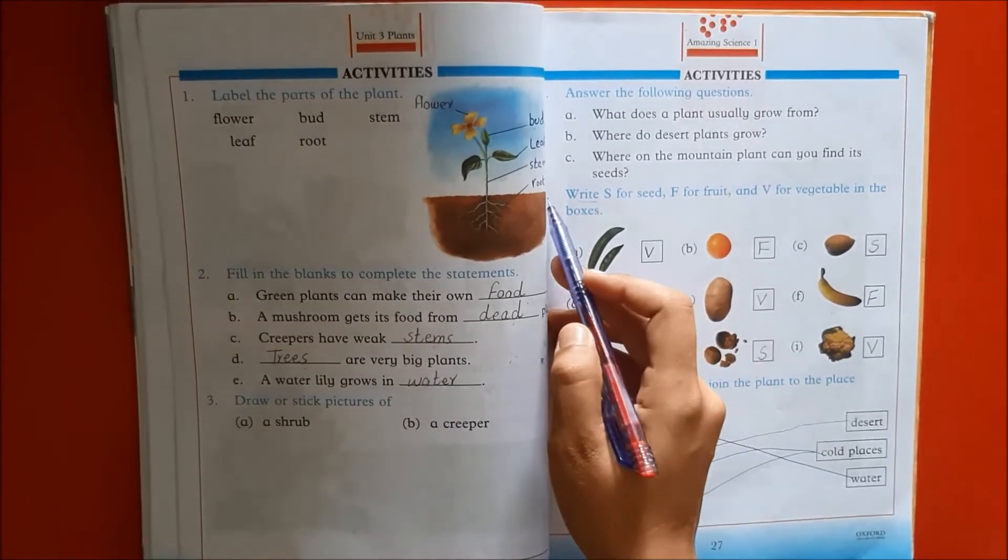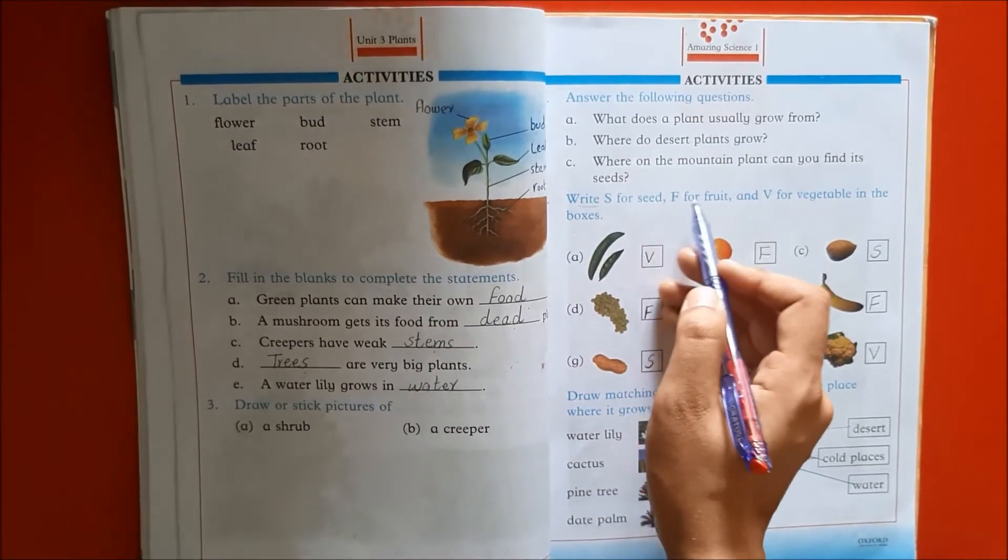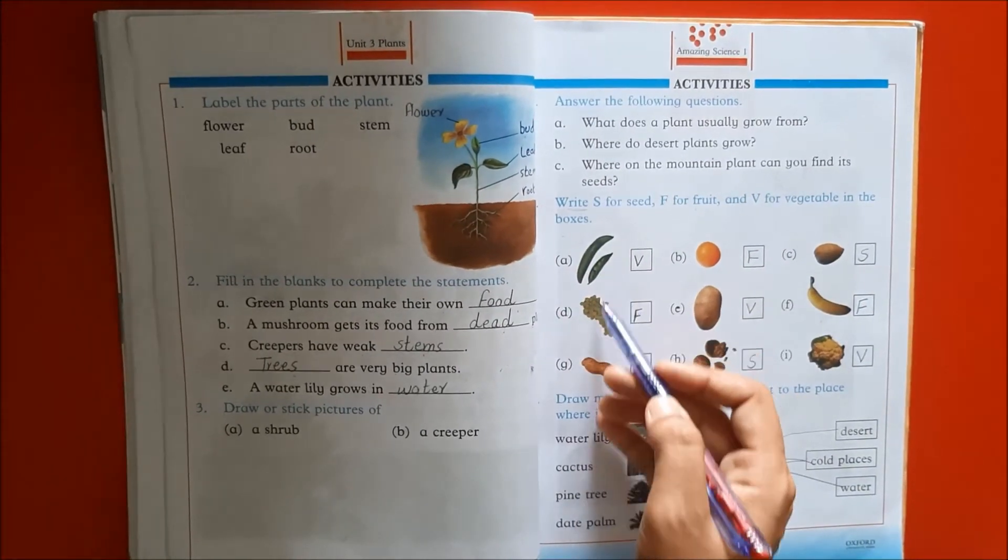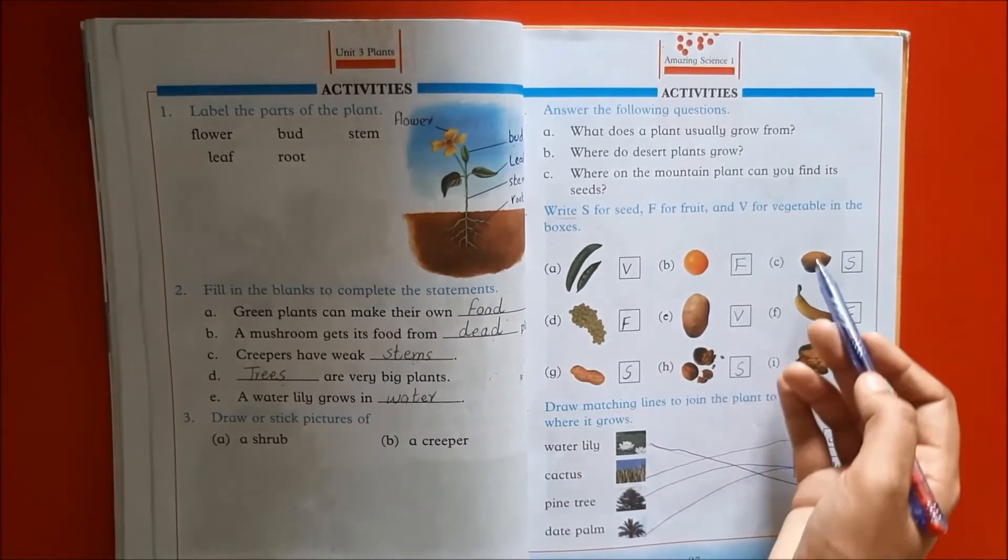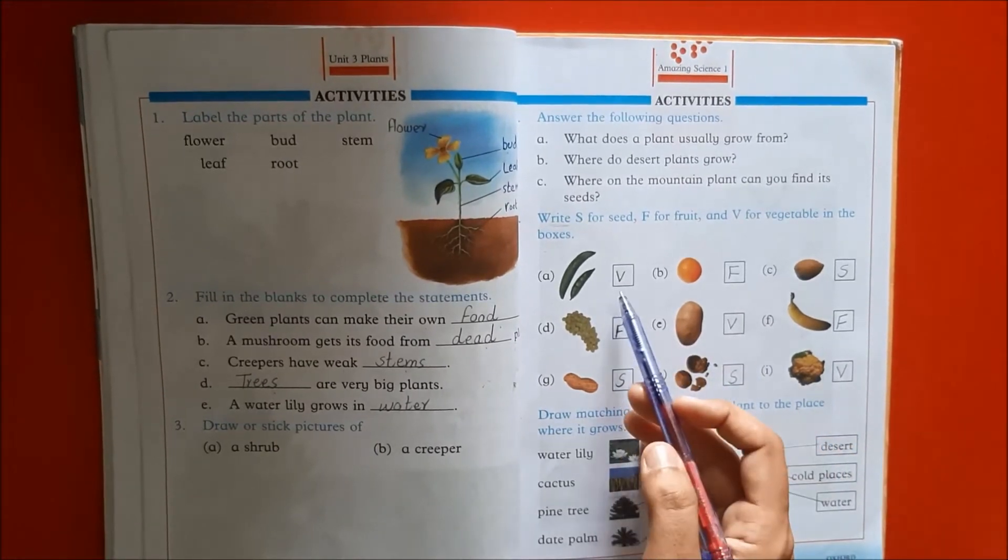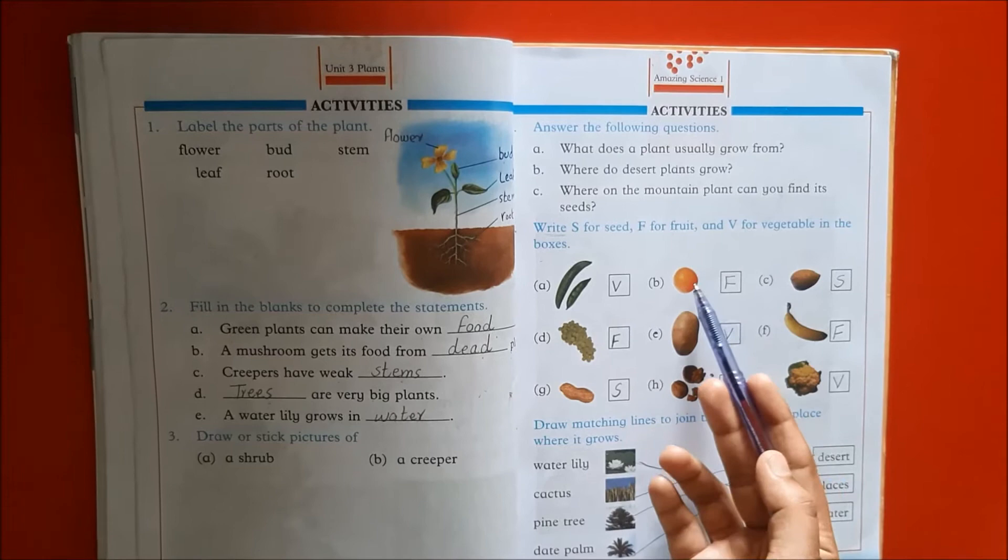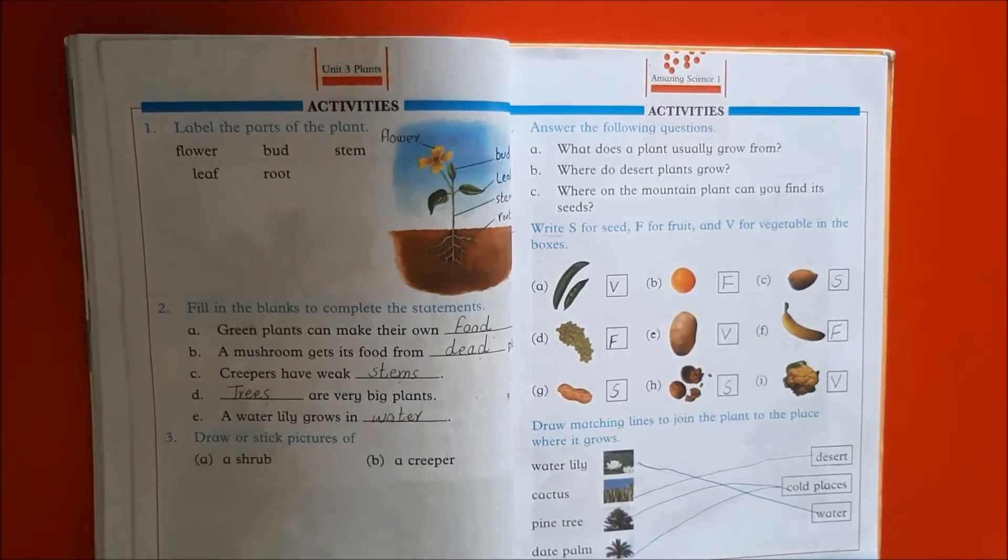Next question number 5, write S for seed, F for fruit, and V for vegetables in the boxes. These pictures are given below. You should learn V in front of vegetable, F in front of fruit, and S for seed.